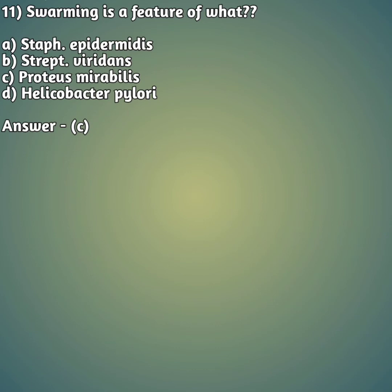Our eleventh question: swarming movement is a feature of which bacteria? Option A: Staph epidermidis, option B: Strept. viridans, option C: Proteus mirabilis, option D: Helicobacter pylori. The right answer is option C — Proteus mirabilis is the bacteria that has the feature of swarming movement.